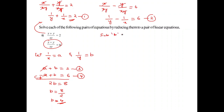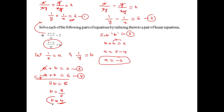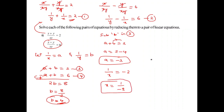Substituting B equals 4 into equation number 3: A plus 4 equals 2. Shifting gives A equals 2 minus 4, so A equals minus 2. Now substituting back: 1 by x equals A equals minus 2, so x equals minus 1 by 2. And 1 by y equals B equals 4, so y equals 1 by 4. These are the required solutions.